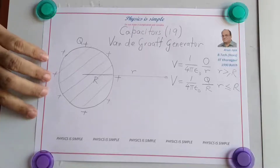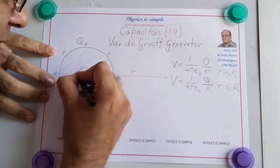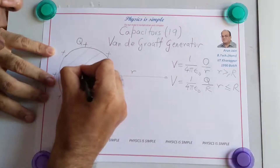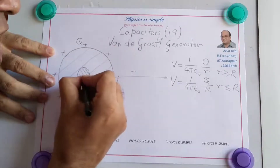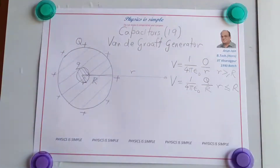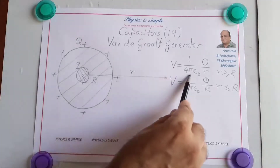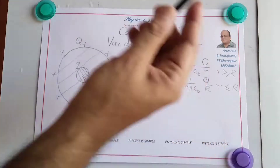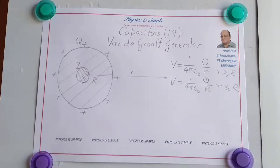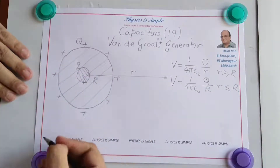Now if we place inside this spherical shell, at the center, another spherical conductor of radius r, having a charge q, the same concepts hold. The potential at any point outside will be given by (1/4πε₀) × q divided by whatever is the distance. And the potential inside will be equal to the potential at the surface.